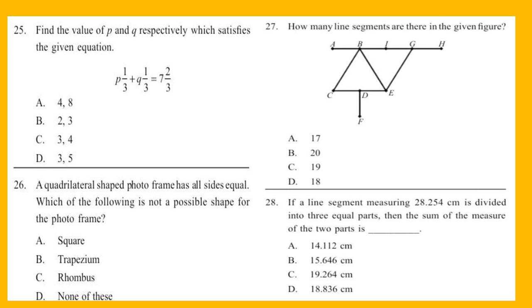Question 26: A quadrilateral-shaped photo frame has all sides equal. Which of the following is not a possible shape for the photo frame? Question 27: How many line segments are there in the given figure?